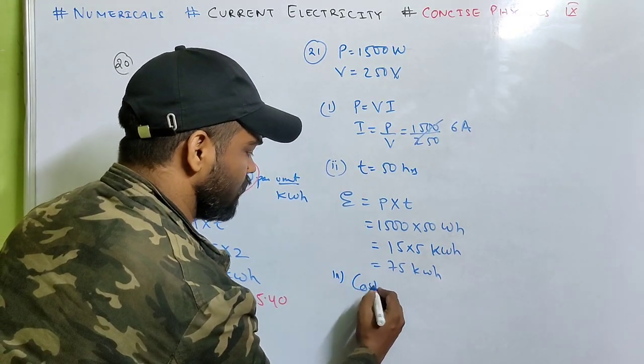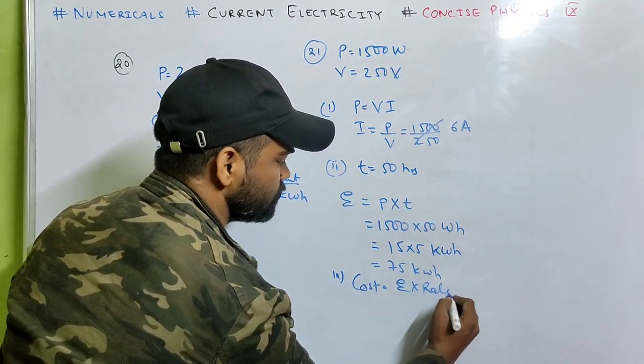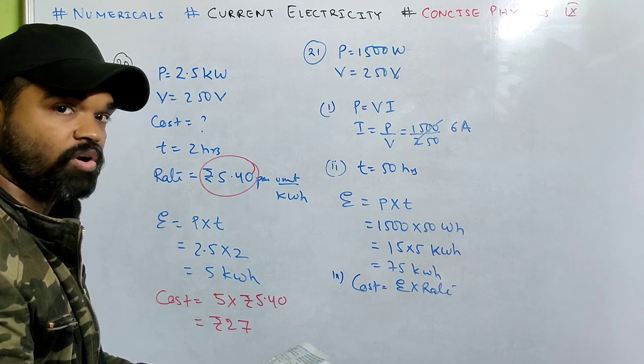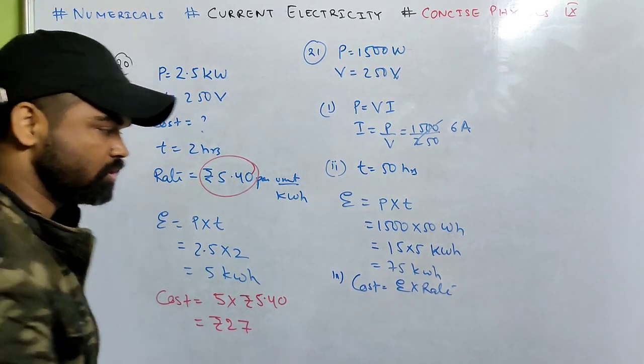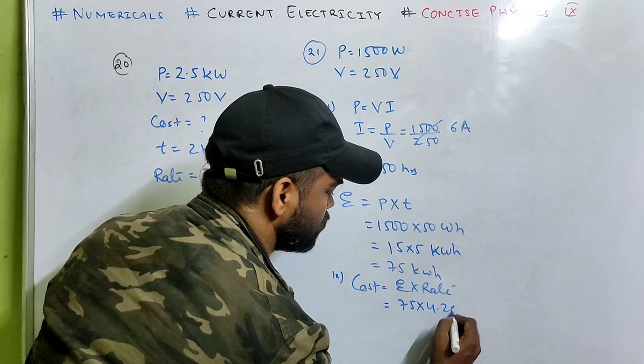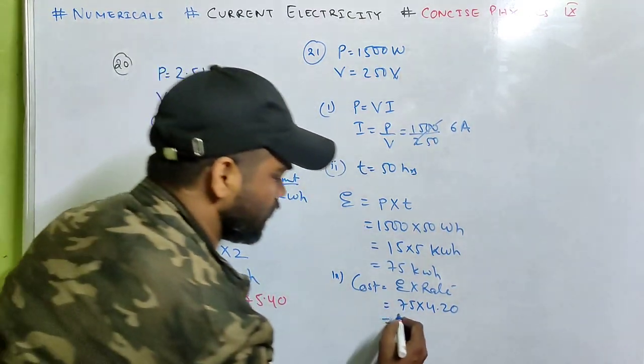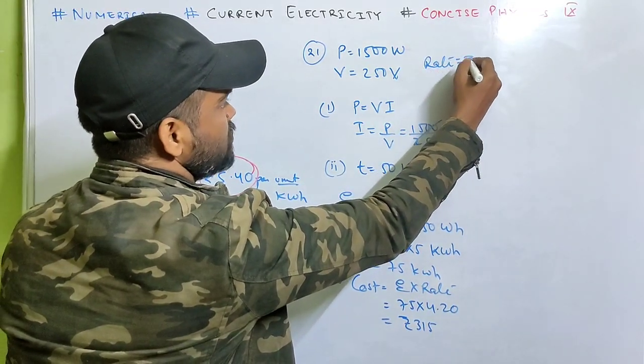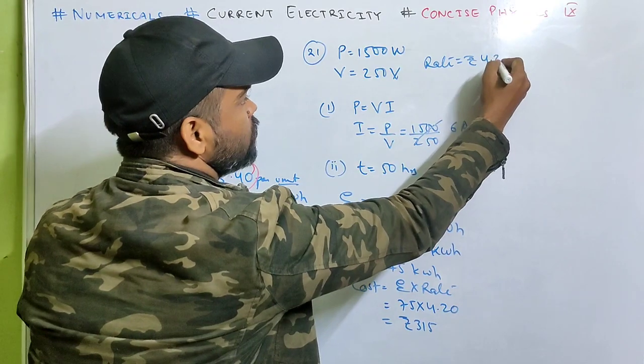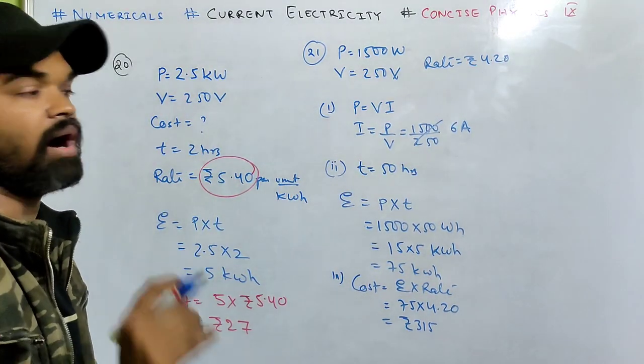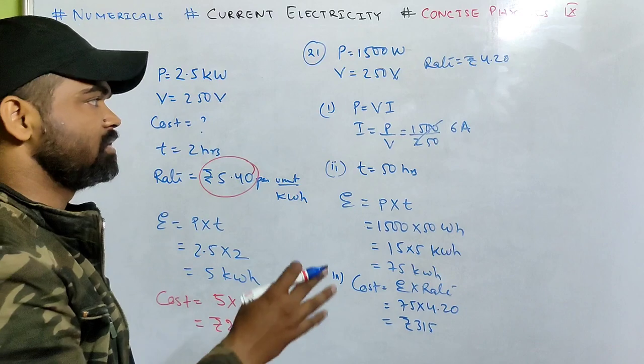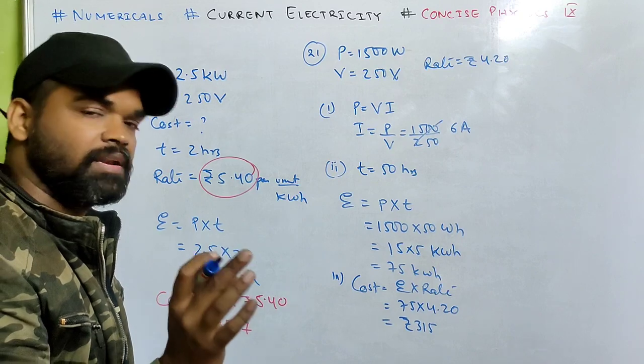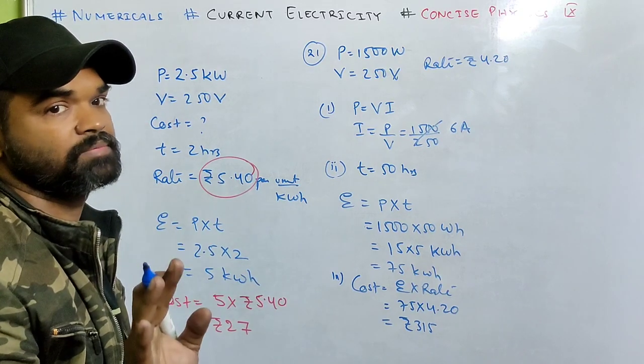And last, the cost. Cost is energy times rate. The cost of energy consumed at rupees 4.20 per kilowatt hour - rate is 4.20. So 75 into 4.20 equals rupees 315. Very easy, step by step. In this chapter you just need to know the formulas and every sum you can solve on your own.